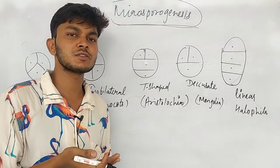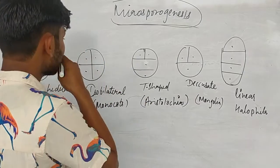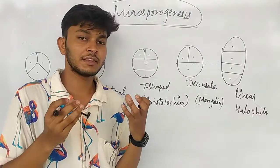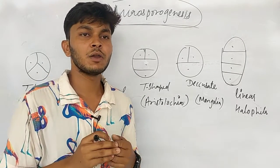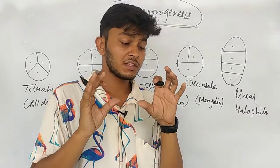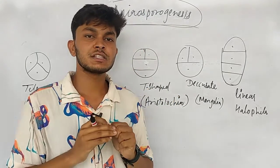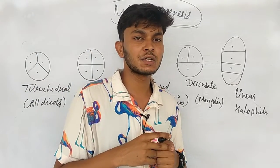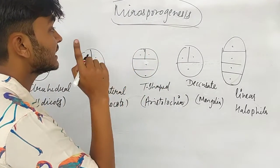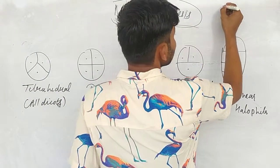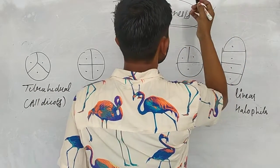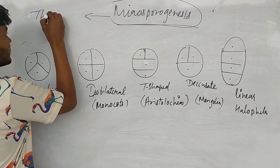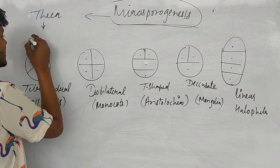What is Microsporogenesis? Yesterday we saw that the anther is a bilobed structure. The bilobed structure contains an internal structure. Each lobe contains two theca — it means a di-theca situation. Each theca contains sporogenous tissue.